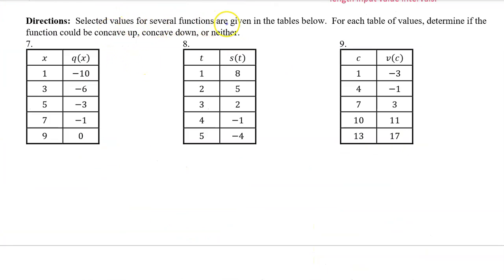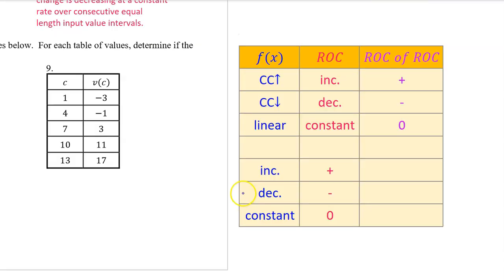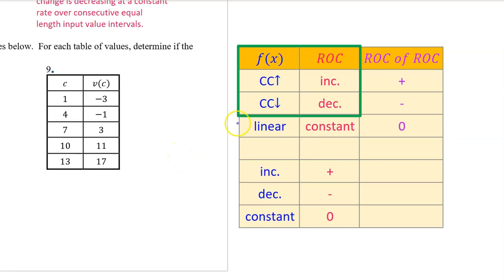Selected values for several functions are given in the tables below. For each table of values, determine if the function could be concave up, concave down, or neither. Here's another chart that I've shown you in previous videos — pause the video and memorize this if you haven't done so already. For these problems, focus on this part of the chart: f(x) will be concave up wherever the rate of change is increasing, and f(x) will be concave down wherever the rate of change is decreasing.